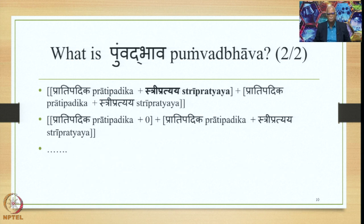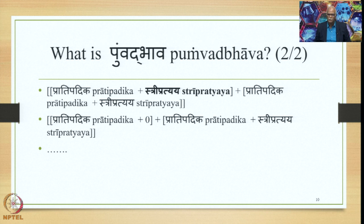Now we have Pratipadhika plus Stripratyaya as the Purvapada, plus Pratipadhika plus Stripratyaya as the Uttarapada. The Stripratyaya in the Purvapada is removed, so the Pratipadhika plus Stripratyaya goes back to its Pratipadhika form. The next step in the derivation is Pratipadhika plus zero, plus Pratipadhika plus Stripratyaya — and Pratipadhika plus zero plus Pratipadhika plus Stripratyaya is the effect of the operation of Pumvadbhava.